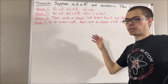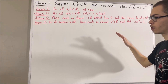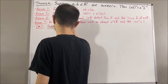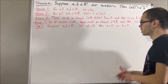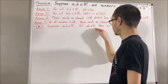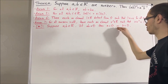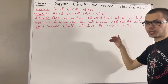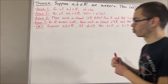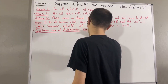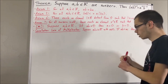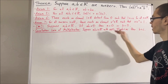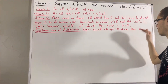We're also going to be using some properties that we have proven so far. One of those properties is: suppose A and B are real numbers; if AB is equal to 0, then A is equal to 0 or B is equal to 0. We've also proven the cancellation law of multiplication, which says: suppose A, B, and C are real numbers with A not equal to 0; if AB is equal to AC, then B is equal to C.